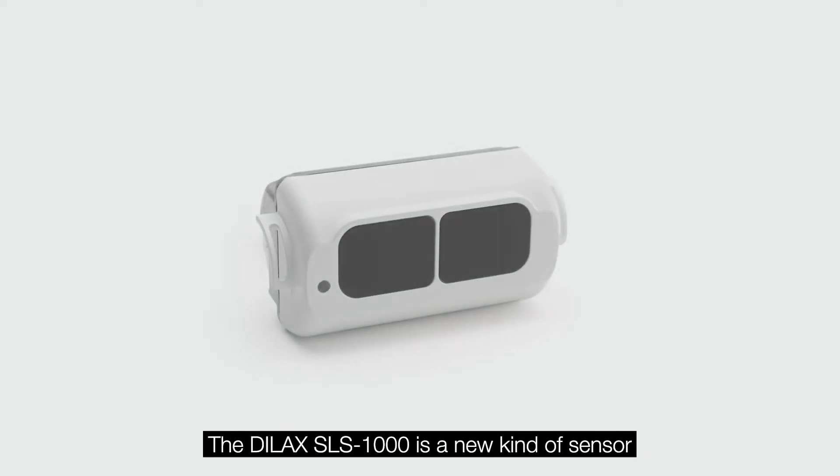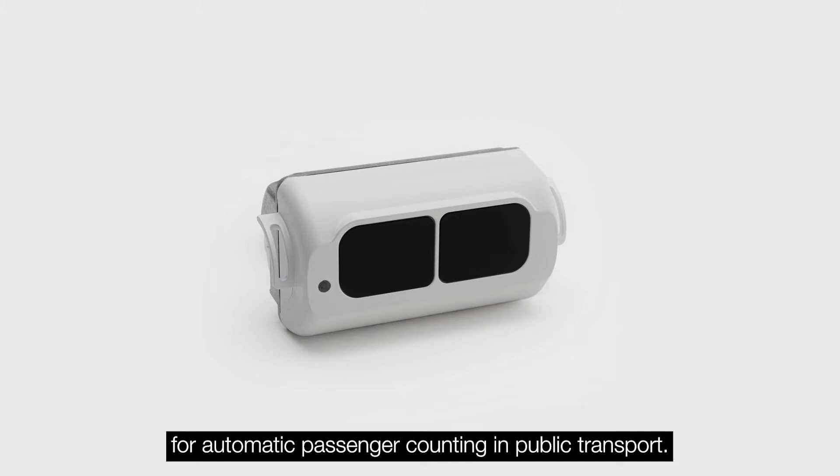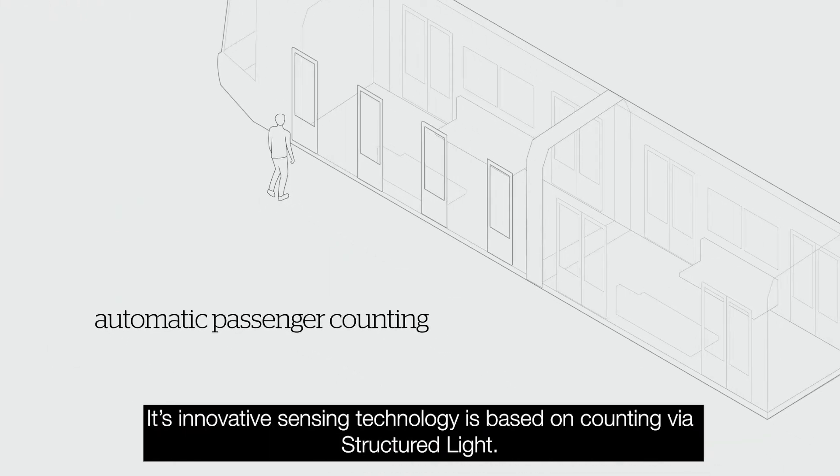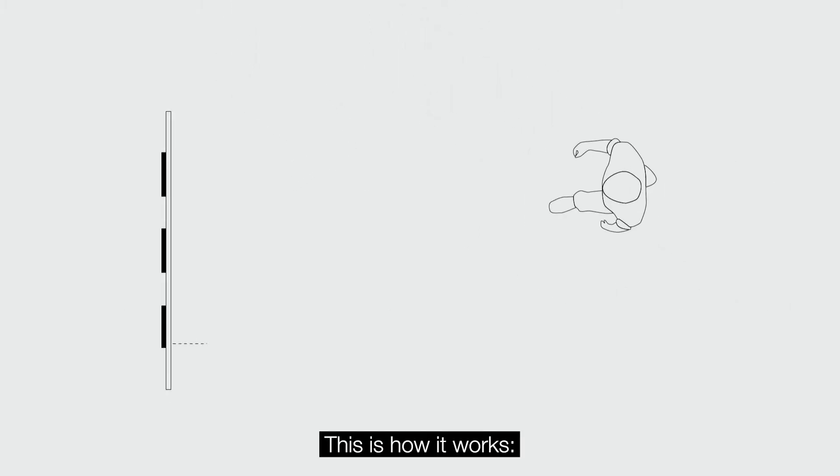The DILAX SLS-1000 is a new kind of sensor for automatic passenger counting in public transport. Its innovative sensing technology is based on counting via structured light. This is how it works.